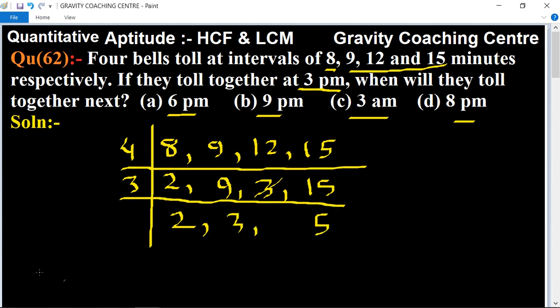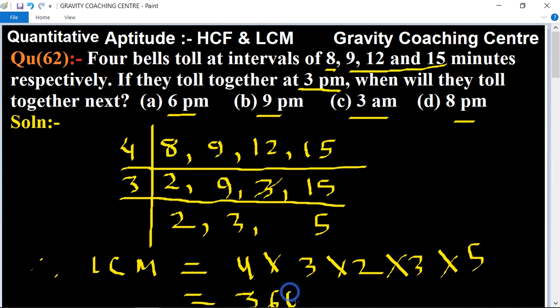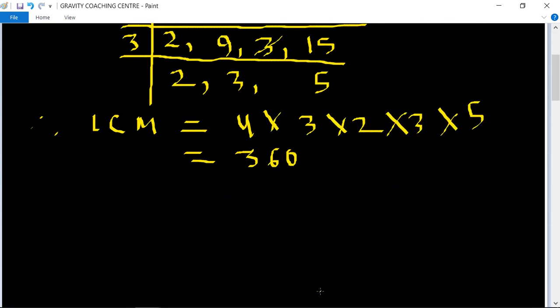Therefore LCM equals 4 times 3 times 2 times 3 times 5. The product is 360, 360 minutes.